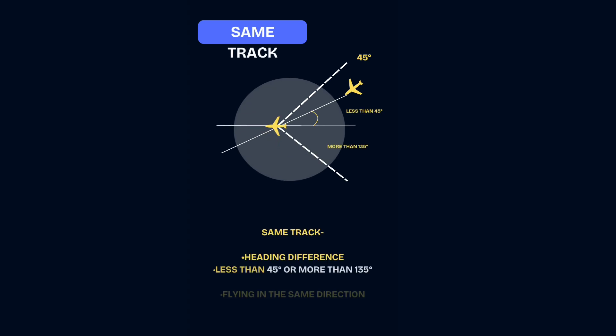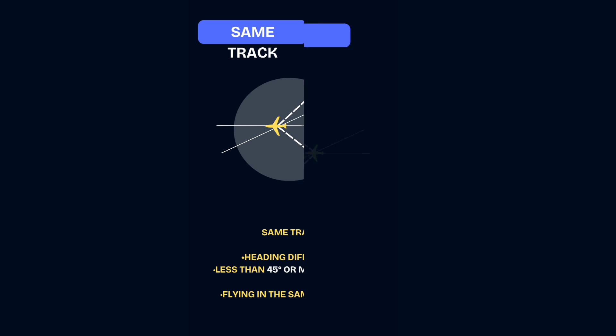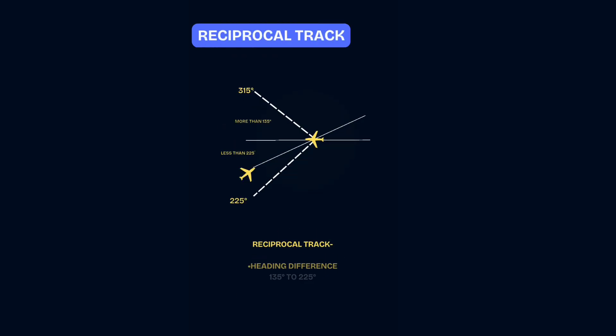First, let's see same track: aircraft are flying in nearly the same direction. That means their heading differs by less than 45 degrees or more than 135 degrees.